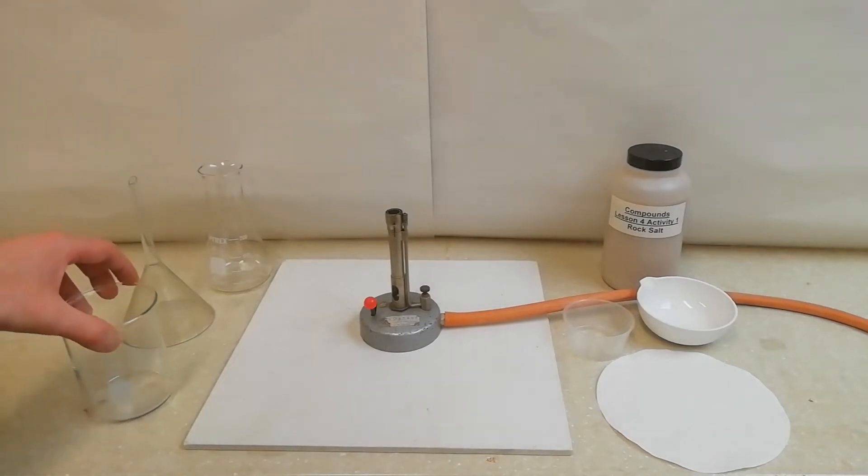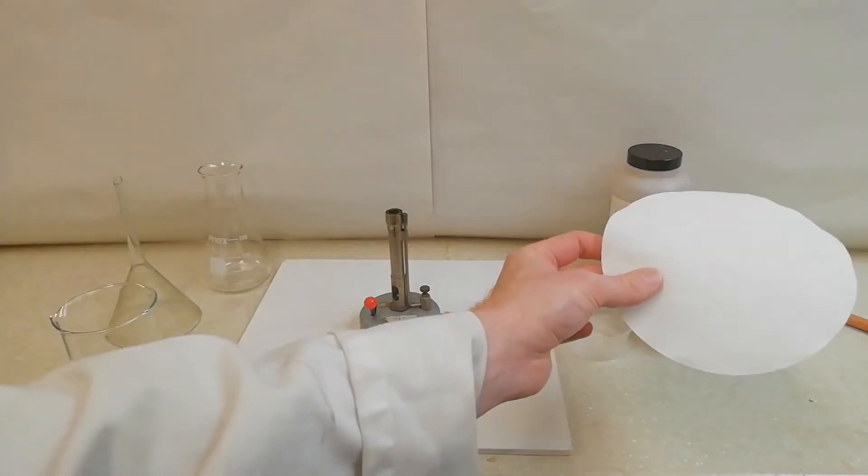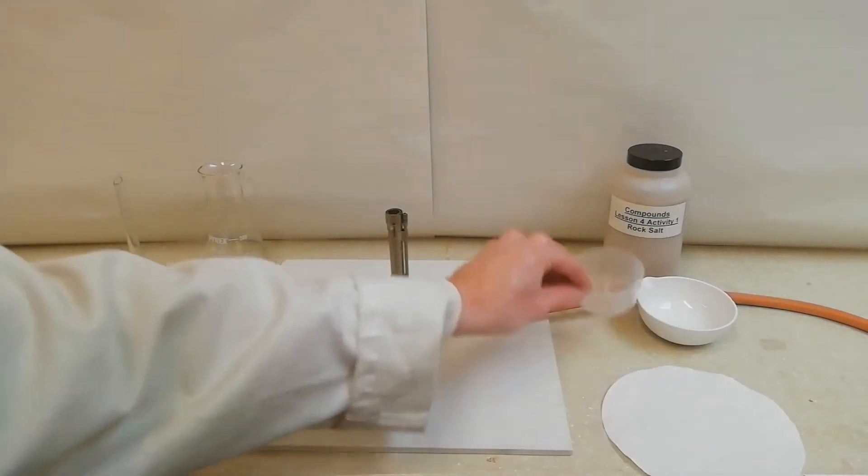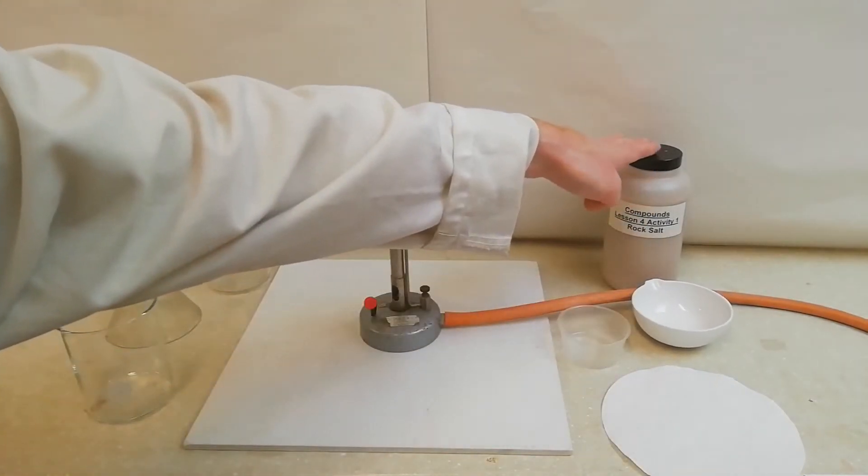So first of all the equipment: got a beaker, got a filter funnel, got a conical flask, got a Bunsen burner, got a bench mat, got a circle of filter paper, got a little weigh boat here, an evaporating basin and the chemical we're going to be using today is rock salt.